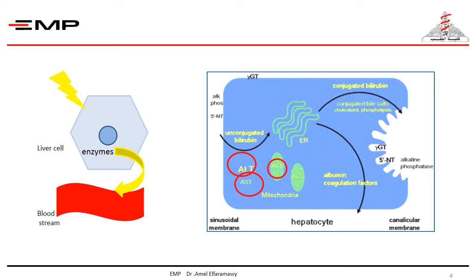Gamma-GT, gamma-glutamyl transferase, originates from the biliary epithelium and hepatocytes. Alkaline phosphatase originates from the canalicular membrane of the hepatocytes as well as other tissues, mainly the bone osteoclasts.